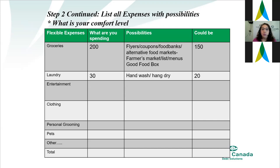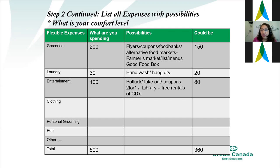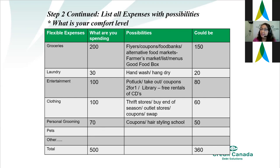With groceries, you decide where you shop, when you shop, and how much you spend. I go through flyers, use the Flipp app, coupons, and alternative food markets. The Good Food Box — also called Food Share — works with local farmers to provide fresh fruits and vegetables at reasonable prices. In regular times you'd also look at entertainment, clothing, and personal grooming — though remember these notes are for non-COVID times.